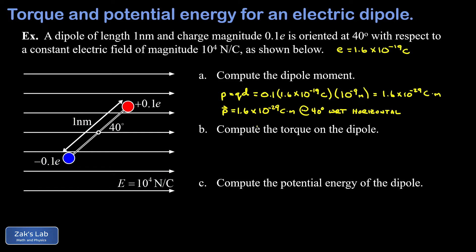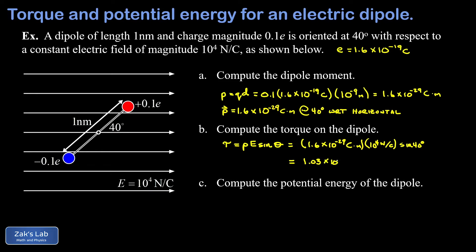In parts b and c we compute the torque and potential energy. The torque magnitude is τ = pE sinθ = (1.6 × 10⁻²⁹ C·m)(10⁴ N/C)(sin 40°). Running the numbers to three significant digits gives 1.03 × 10⁻²⁵ N·m. The coulombs cancel and we get units of newton-meters, the familiar units of torque.